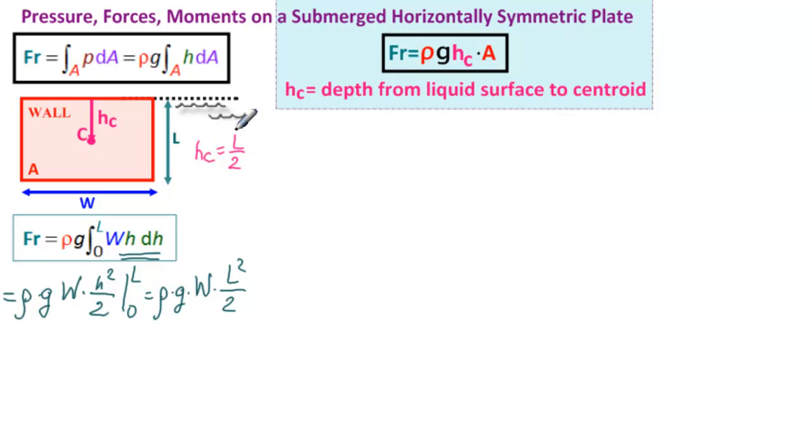Which would leave us rho g w L squared over 2. We need L over 2 for the h, and we hope we're left with the area. So let's see, rho g L over 2, and if we take L over 2, we're left with w times L. This is the area, so rho g hc times A. Exactly what we wanted. So the integral works with the formula.